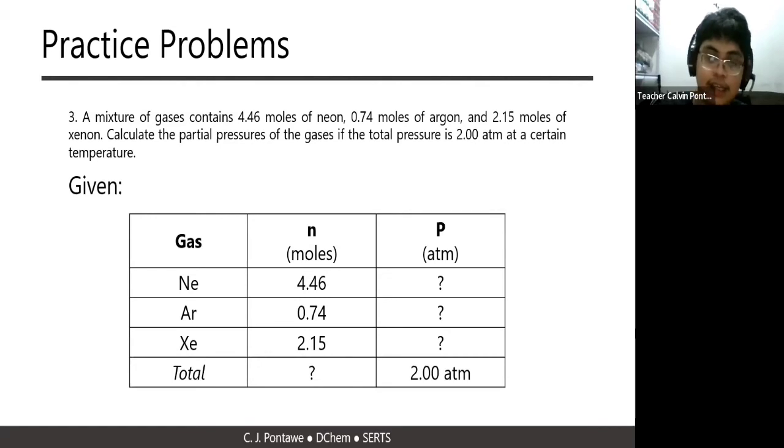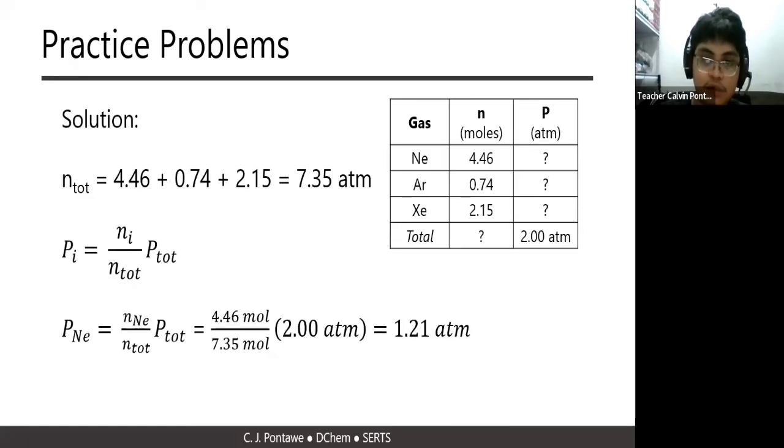And ang first mong gagawin ay, of course, to compute for the total number of moles. You will just add them up, and you will arrive with 7.35 moles. And from that, you can substitute using the formula. For neon, number of moles ni neon ay 4.46 over sa total number of moles ng system, which is 7.35 moles, times sa total pressure. You will arrive with an answer 1.21 atmosphere.